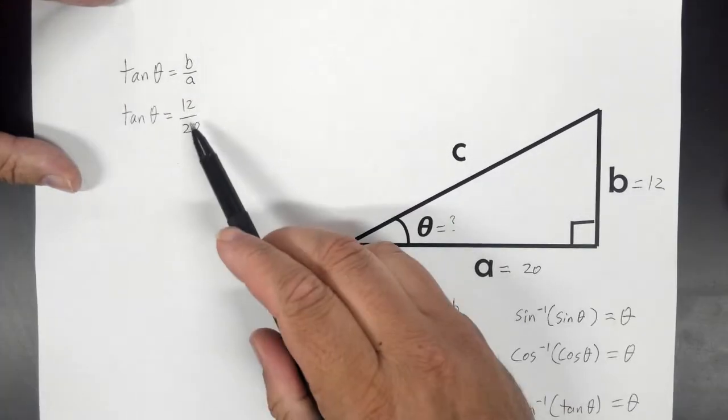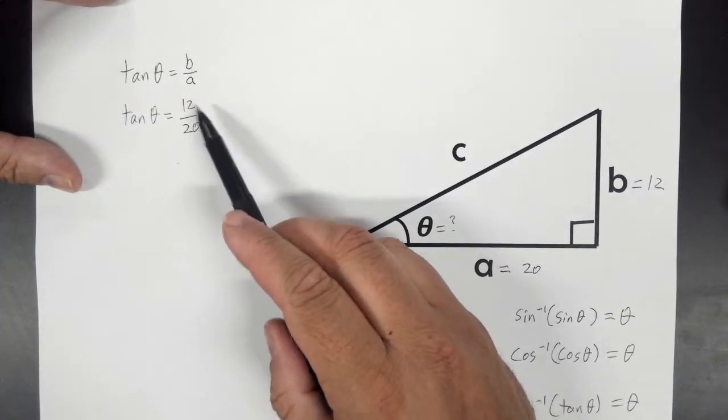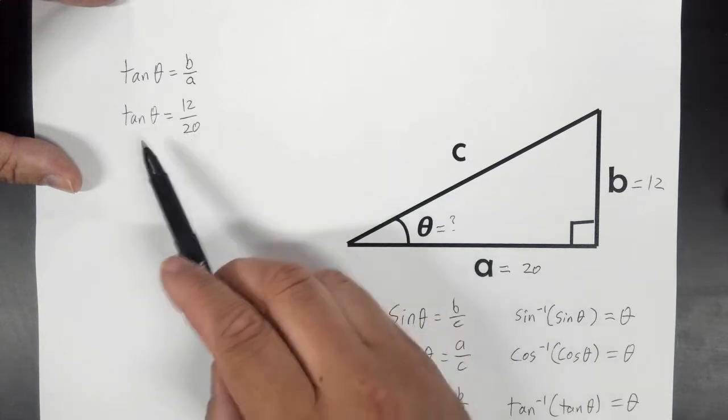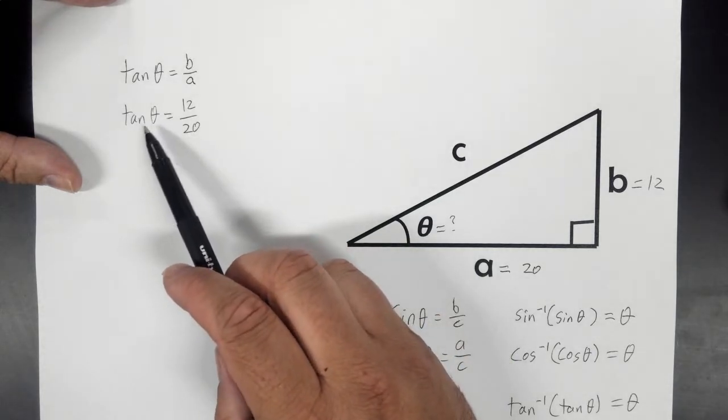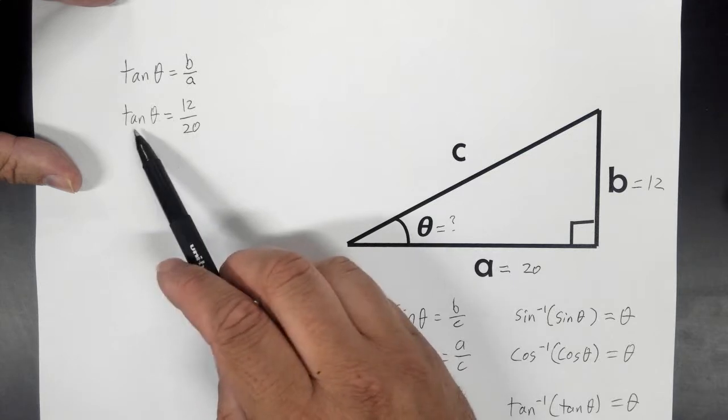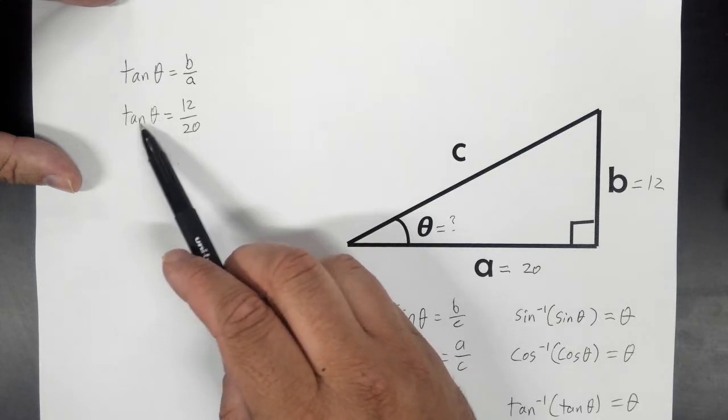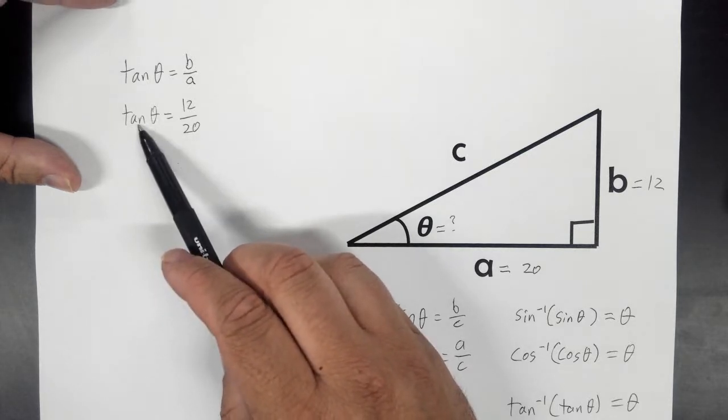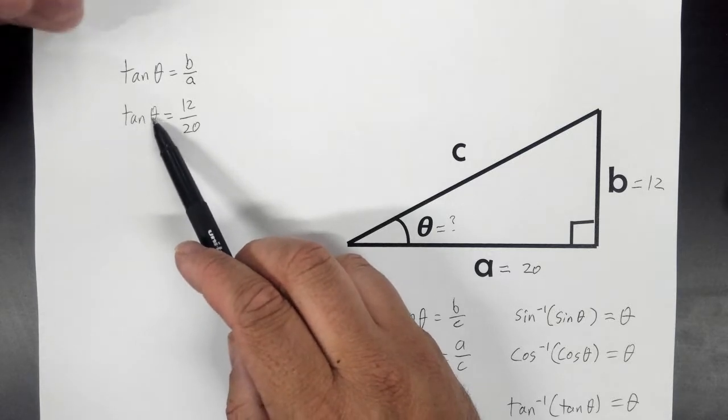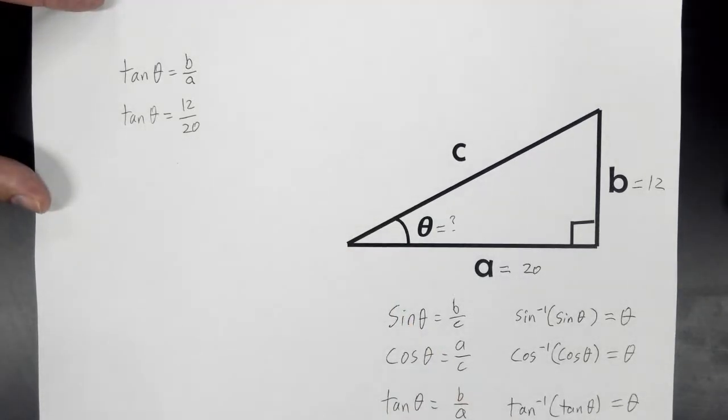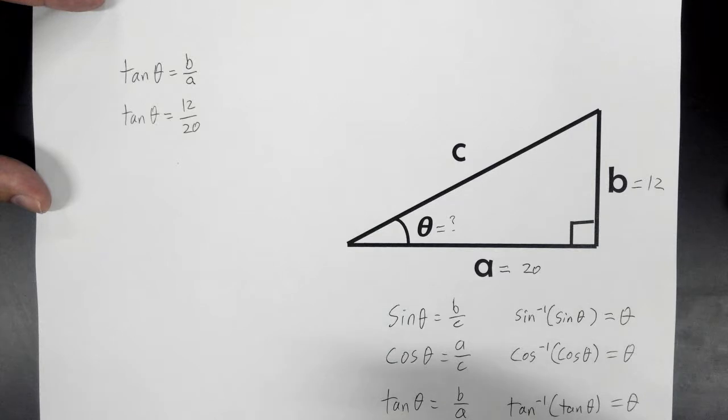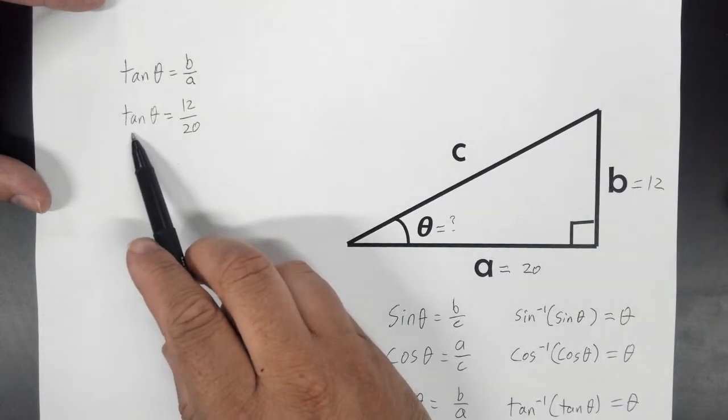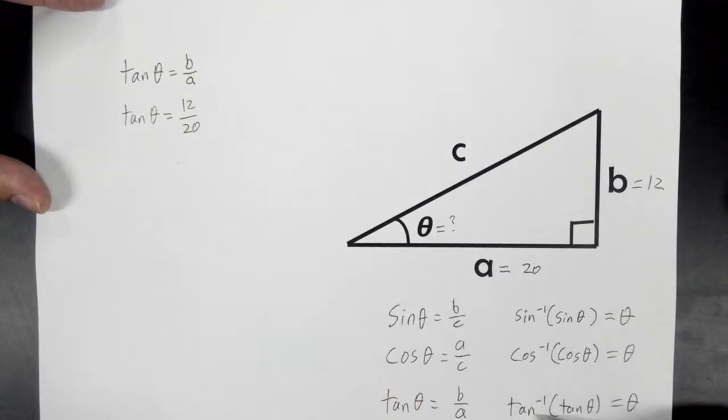So now we know both these sides. We know what they are. I mean, we can find out what 12 divided by 20 is easily. But we don't know the angle, right? So we can't just use normal algebra to divide by tangent because it's not tangent by itself, it's tangent of this angle. So we need some way to get rid of the tangent on this side.